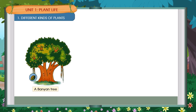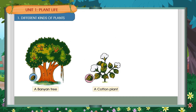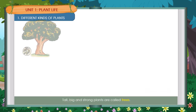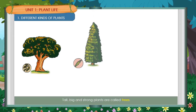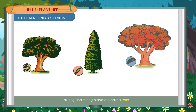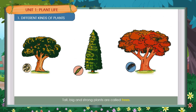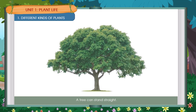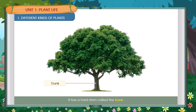A Banyan Tree, A Cotton Plant, A Mint Herb. Tall, big and strong plants are called trees. A tree can stand straight. It has a hard stem called the trunk.